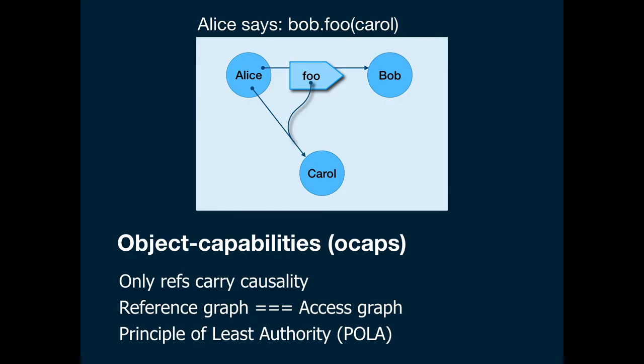This gets at the core idea of object capabilities: a conventional object reference, familiar from object programming, is a permission. If object Bob does not have a reference to object Carol, then Bob cannot invoke Carol, cannot provoke whatever behavior Carol would have. If Alice has a reference to Bob, and Alice invokes Bob passing Carol as an argument, then Alice has both used her permission to invoke Bob and given Bob permission to invoke Carol.